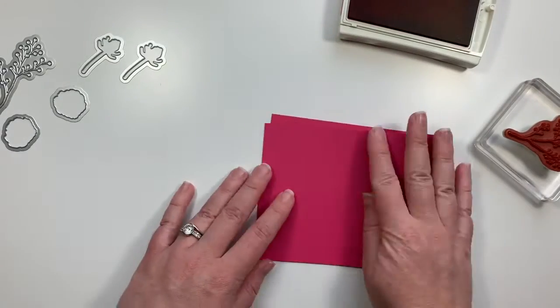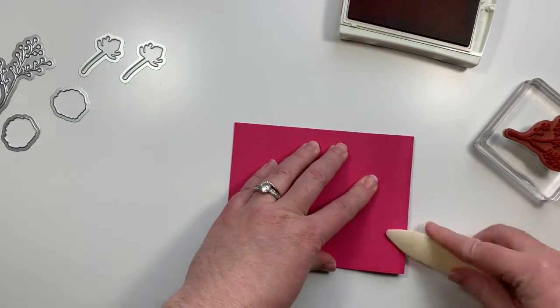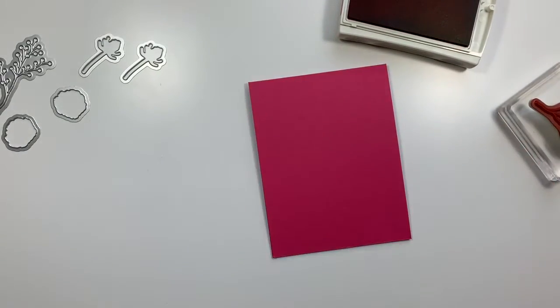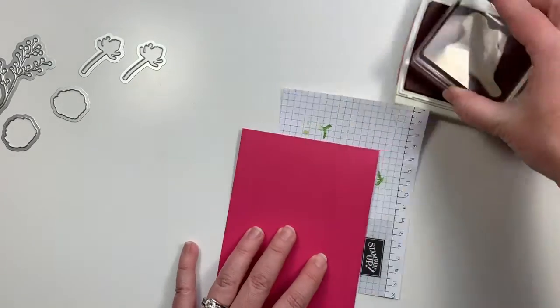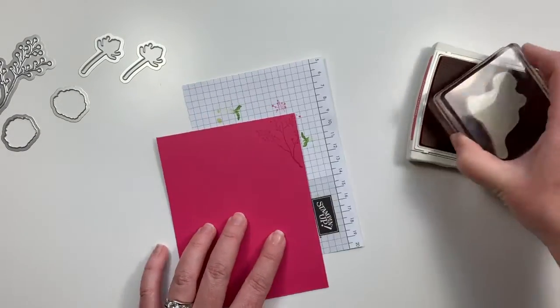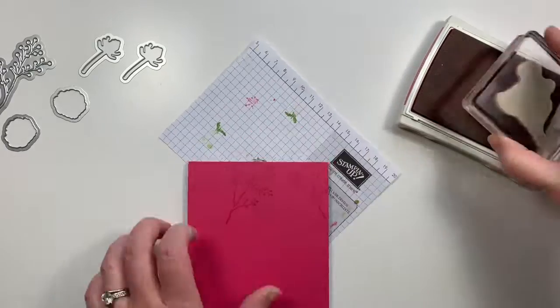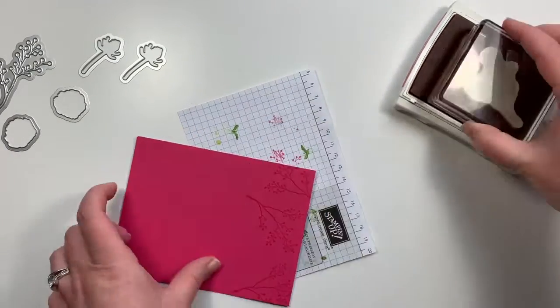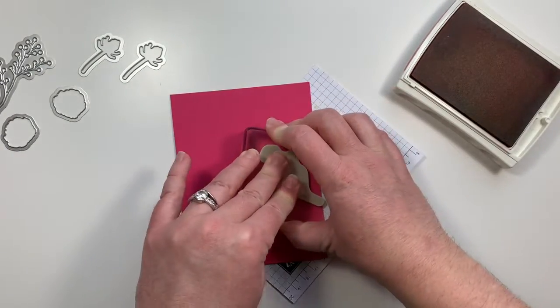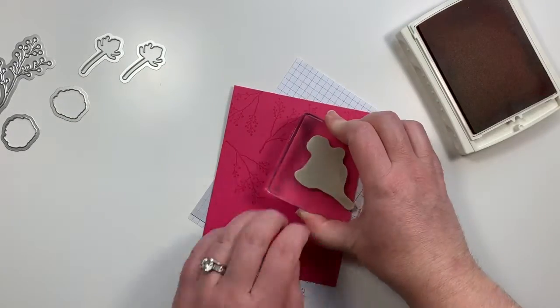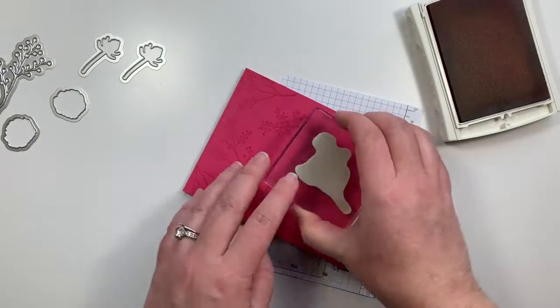The next card that I'm going to do I'm actually going to stamp all over and I'm going to stamp off the edges so that it looks like the card was printed that way. So I'm just going to go all over and I'm using the same color ink, Melon Mambo as the cardstock so that it gives me a subtle watercolor effect.